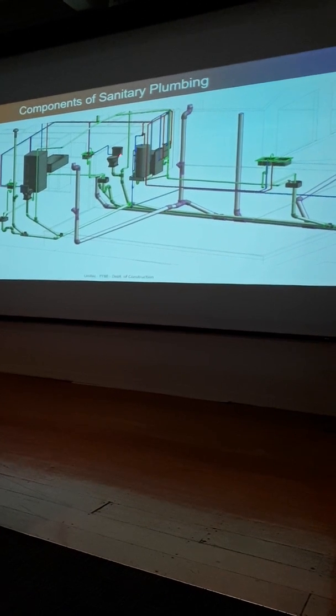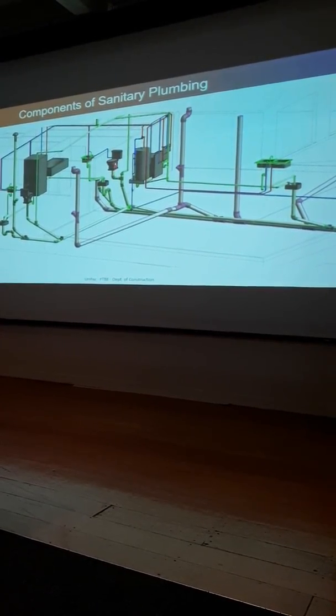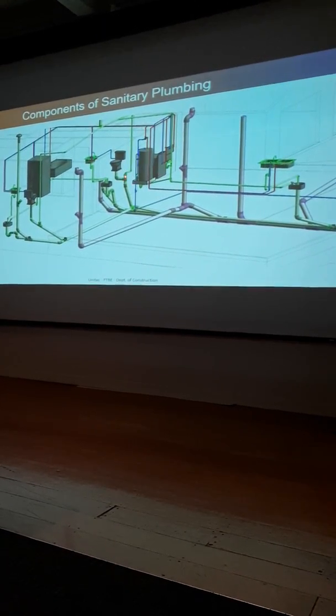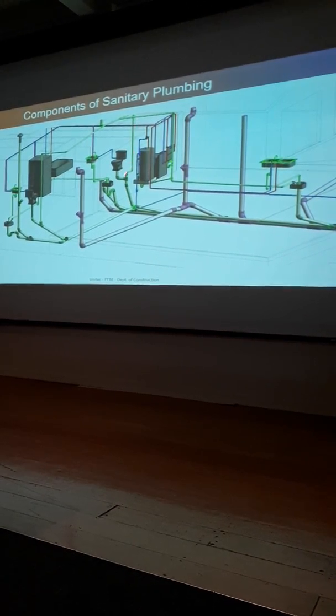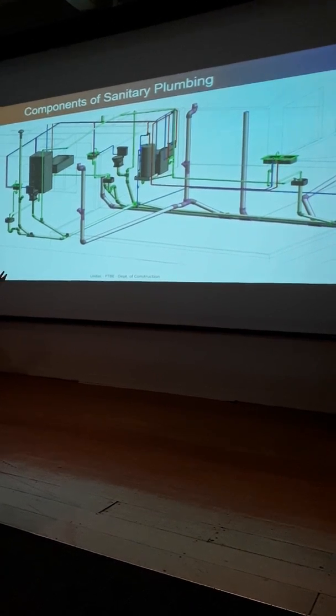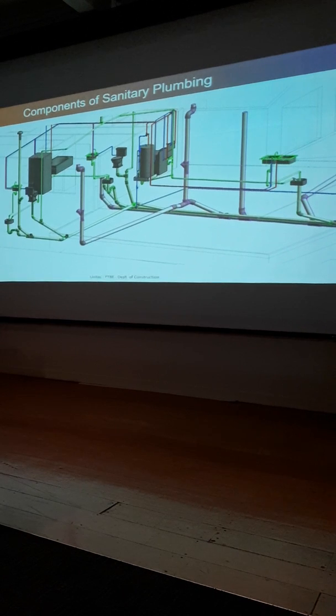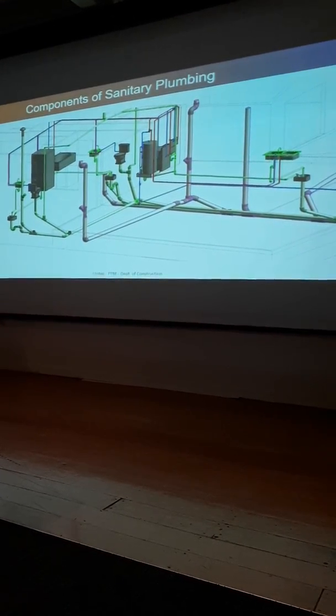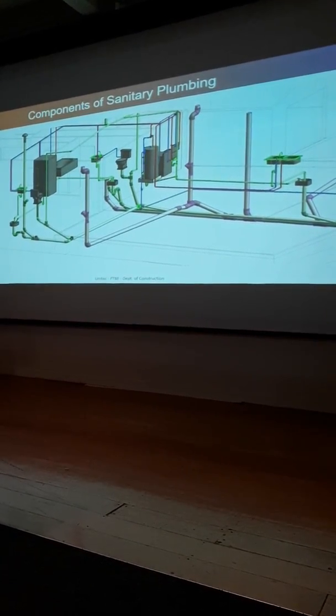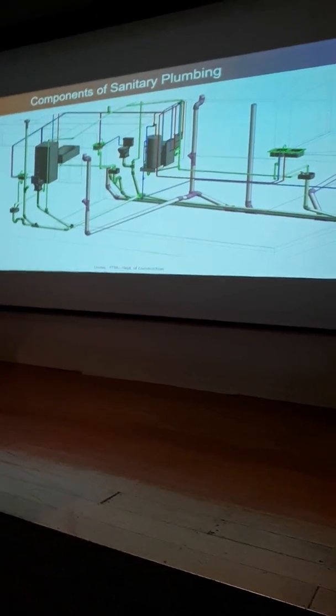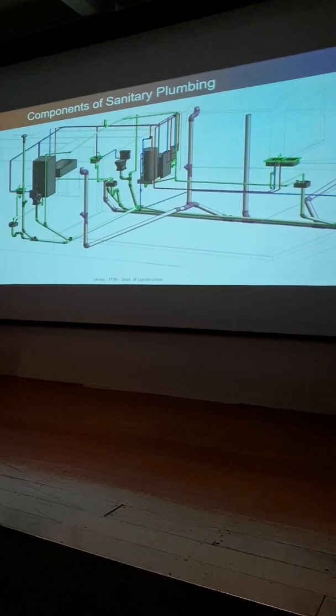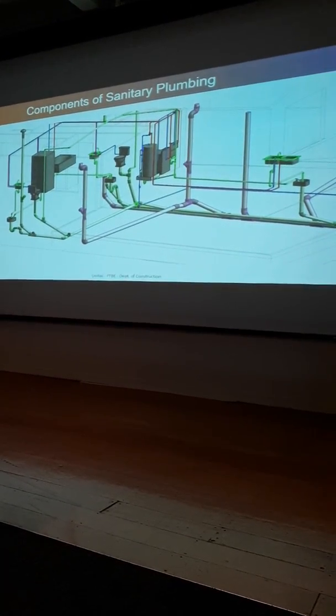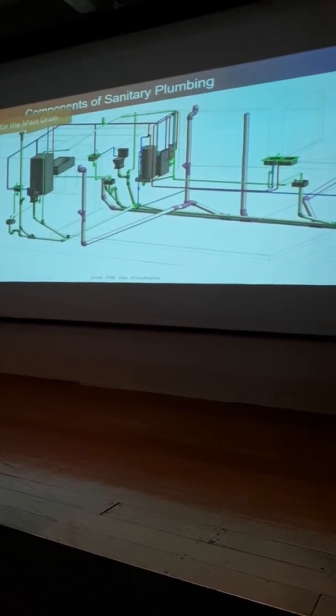The reason we have a vent in that system is because that toilet will have an S-trap or a P-trap, which is a water seal that stops the smell coming out. The problem is when you flush that, or in other systems another pipe might run past there, there could be a vacuum created in that system. That would suck the water out of that toilet trap. If that happens, then you start to get the smells from the sewer. The ventilation avoids that vacuum occurring. It's a back vent or stack. Ventilation in general is there to stop that happening, to stop the vacuum creating in the system.